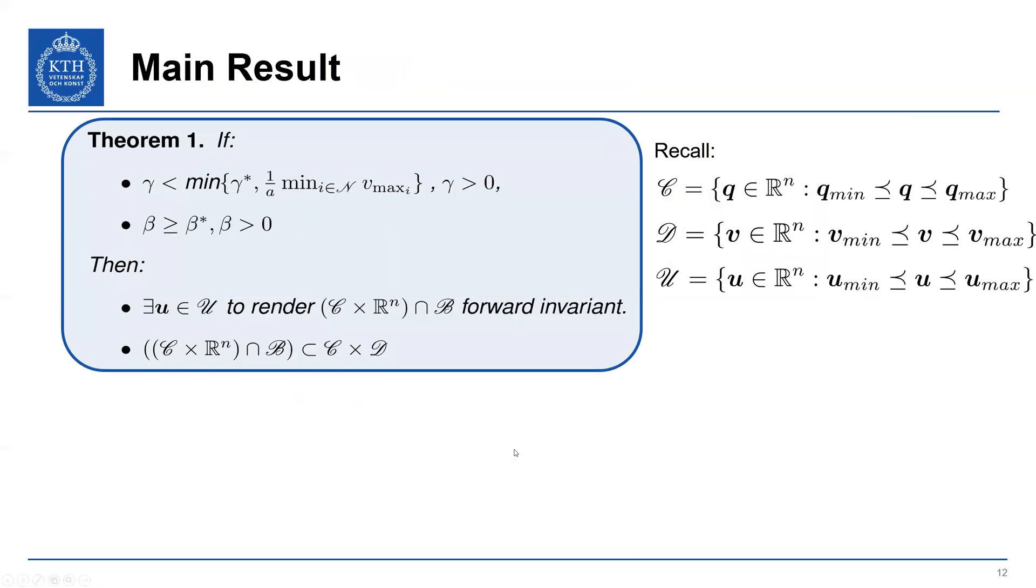Okay, so with that, we can state our main results. If we have gamma satisfying these conditions, it's less than gamma star, but it's also less than the maximum velocity of the system, and beta is lower bounded by beta star, then there exists a U satisfying our control inputs to render our safe set here forward invariant. And then we can show, of course, that the safe set is a subset of our constraint sets. We recall that these are the constraint sets here, the box constraints for the position, velocity, and input.